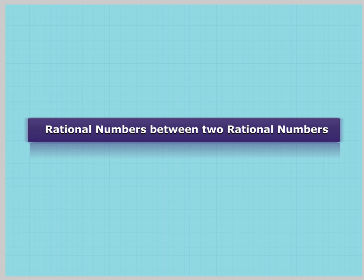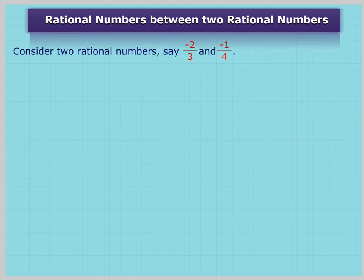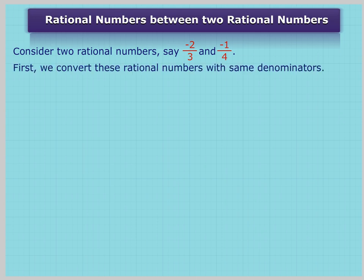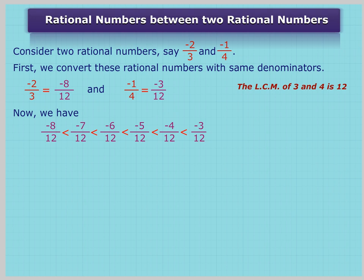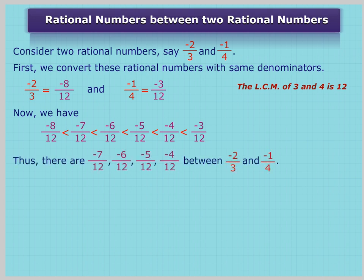Rational numbers between two rational numbers. Consider two rational numbers, -2/3 and -1/4. First, we convert these rational numbers to have the same denominator. -2/3 = -8/12 and -1/4 = -3/12, since the LCM of 3 and 4 is 12. Now, -8/12 < -7/12 < -6/12 < -5/12 < -4/12. Thus, there are -7/12, -6/12, -5/12, and -4/12 between -2/3 and -1/4.